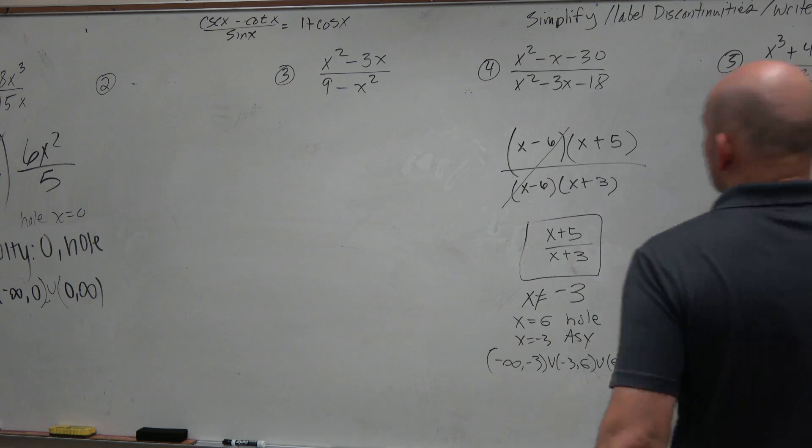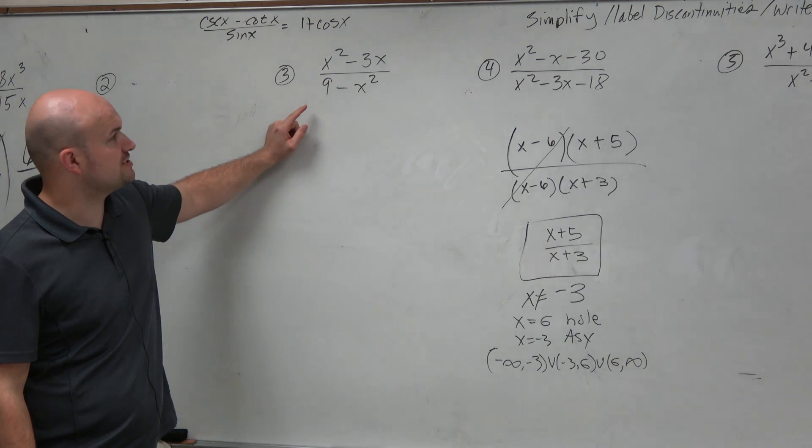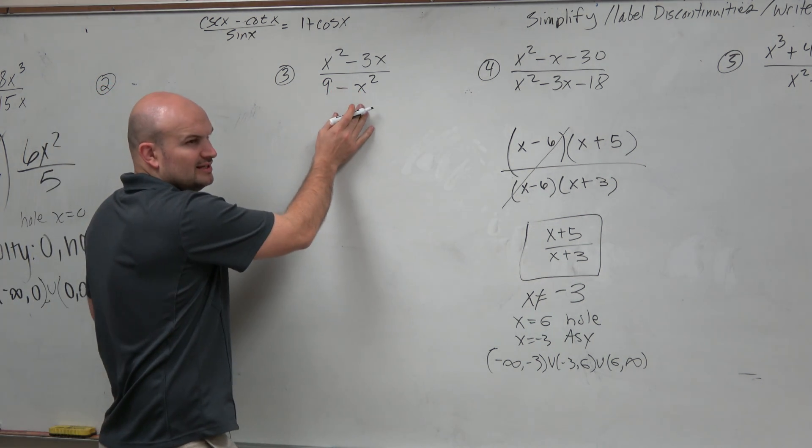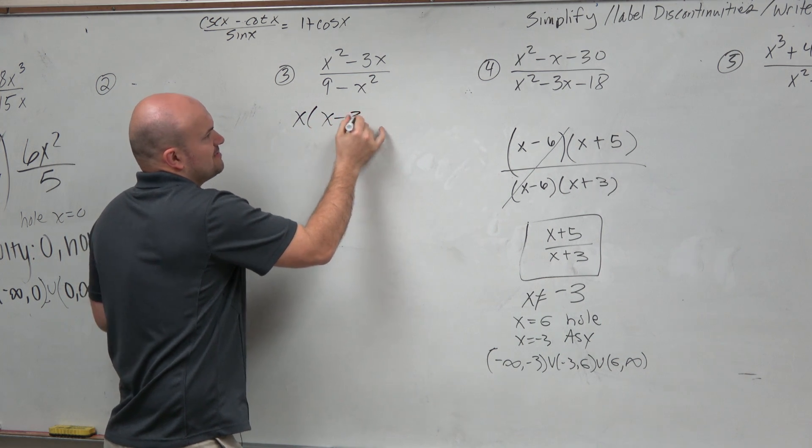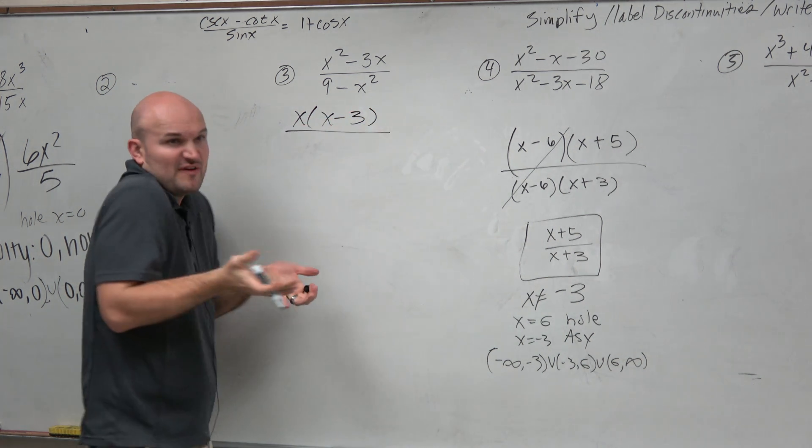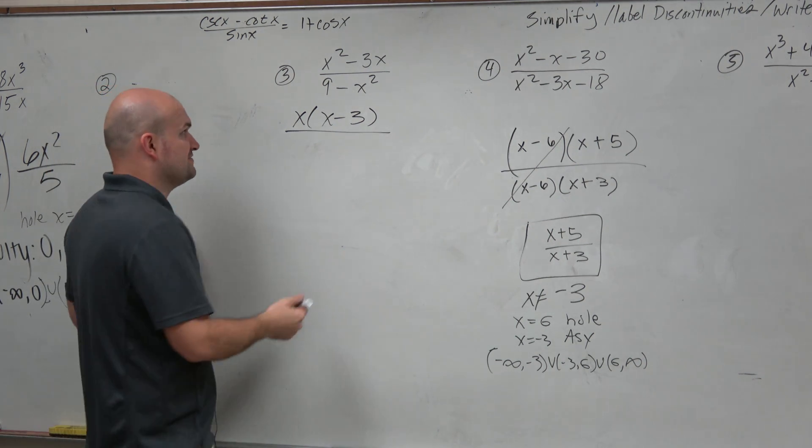In this example, the numerator is easily factored. We can just factor out the x, and I get x minus 3. You're just factoring out the greatest common factor. That's relatively basic as far as factoring.